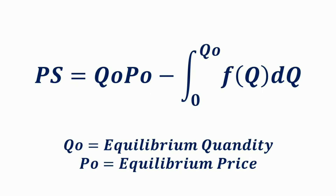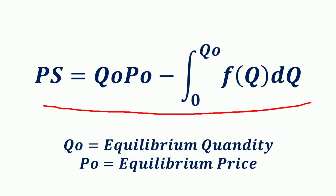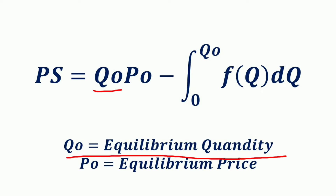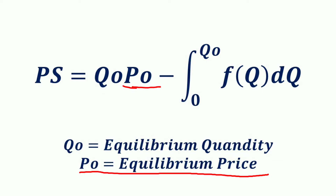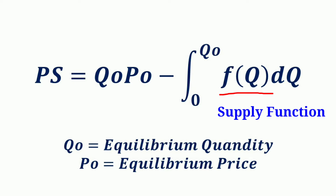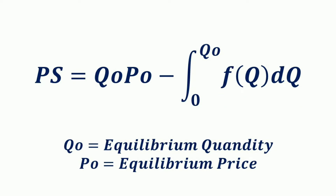If the supply function is given — representing the different prices that producers are willing to sell different quantities of goods and services — then with the given equilibrium price and quantity, producer surplus can be mathematically calculated as: PS = Q0 × P0 − ∫₀^Q0 F(Q) dQ. Here Q0 is the equilibrium quantity, P0 is the equilibrium price, and F(Q) is the supply function, as against the demand function used in consumer surplus.